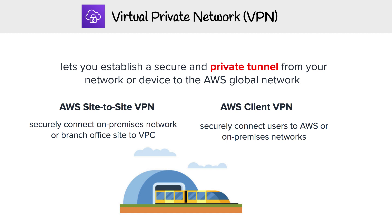It comes in two variations: site-to-site VPN and client VPN. For site-to-site, this is where you securely connect on-premises networks or a branch office to your AWS VPC. For the client VPN, this is where you securely connect users to AWS or on-premises networks.